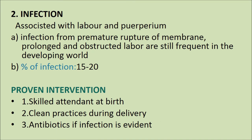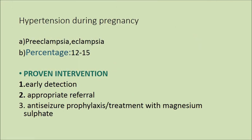Infection is associated with labor and puerperium. Infection from premature rupture of membranes, prolonged and obstructed labor are still frequent in developing countries, and the percentage of infection cases is 15 to 20 percent. Proven interventions include skilled attendant at birth, clean practices during delivery, and antibiotics when infection is evident.